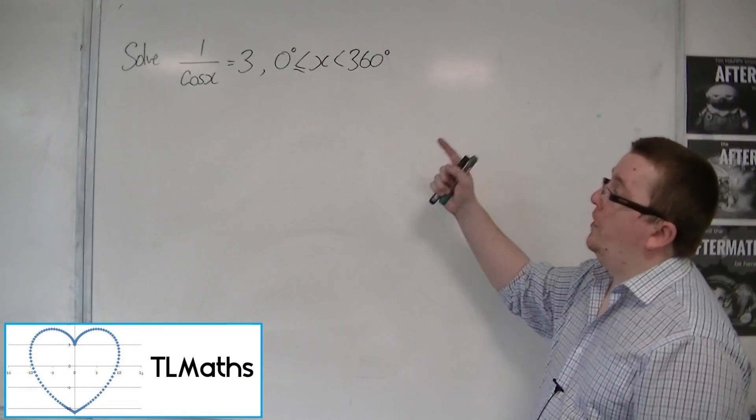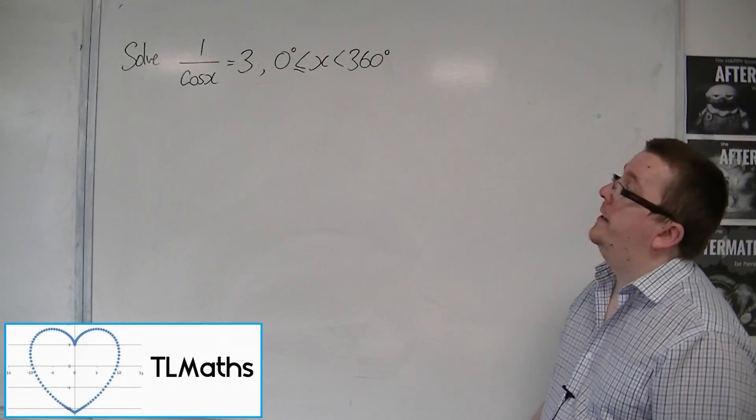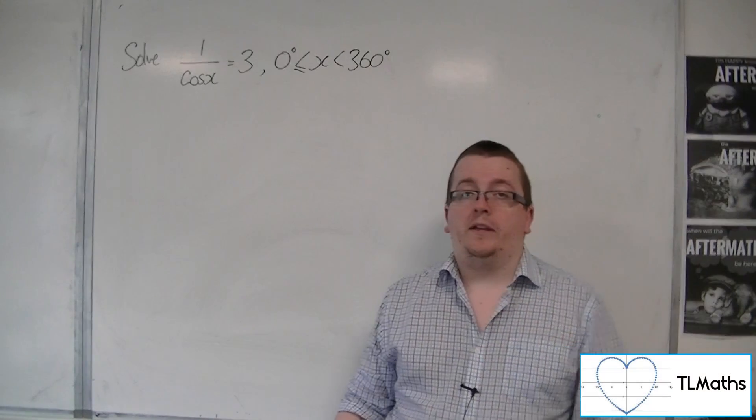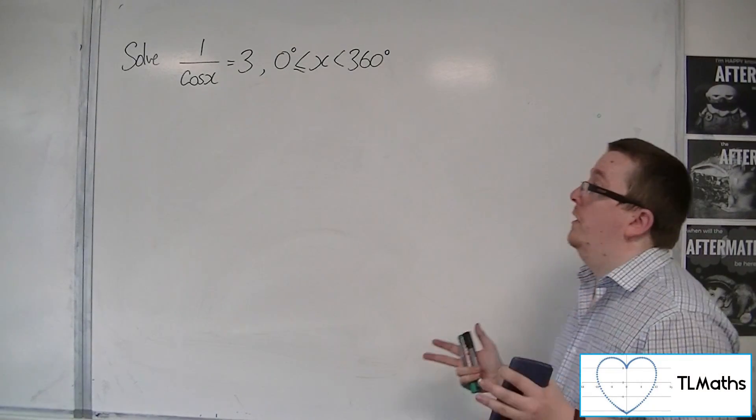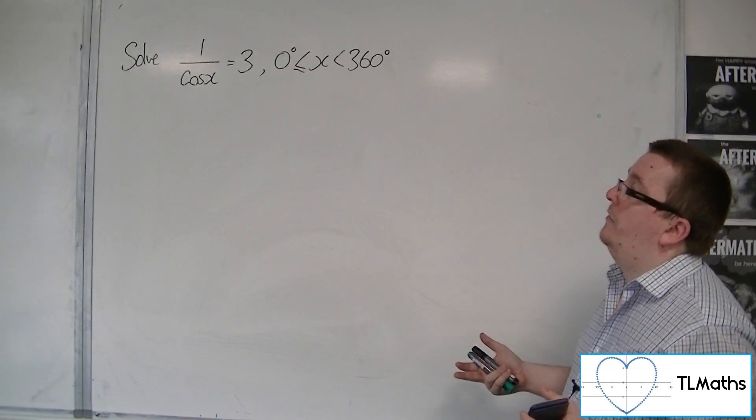In this video, we're going to solve 1 over cos x equals 3 between 0 and 360 degrees. Now, this looks absolutely horrible to start off with. How are we going to go about doing it?